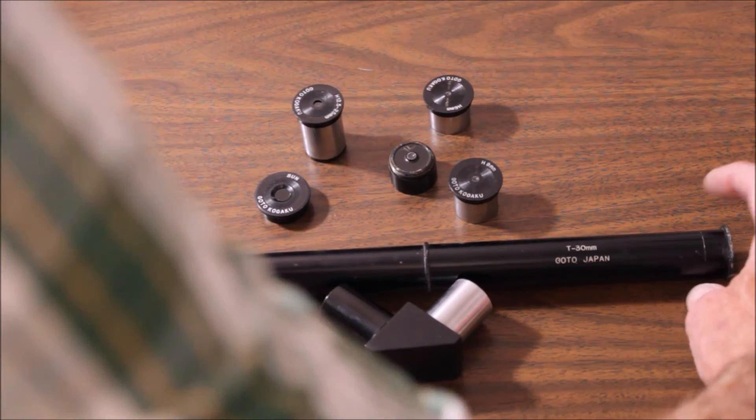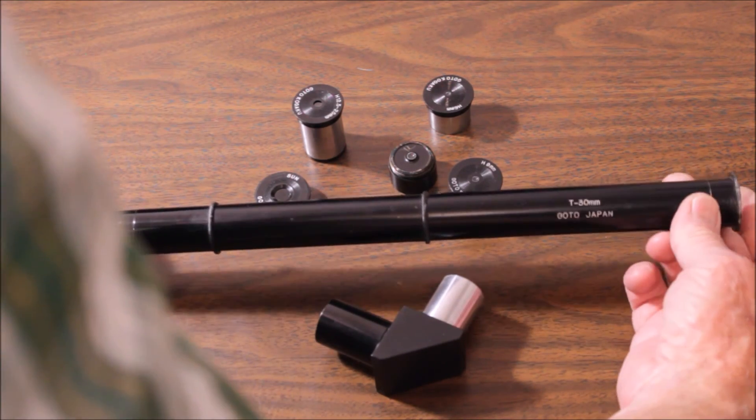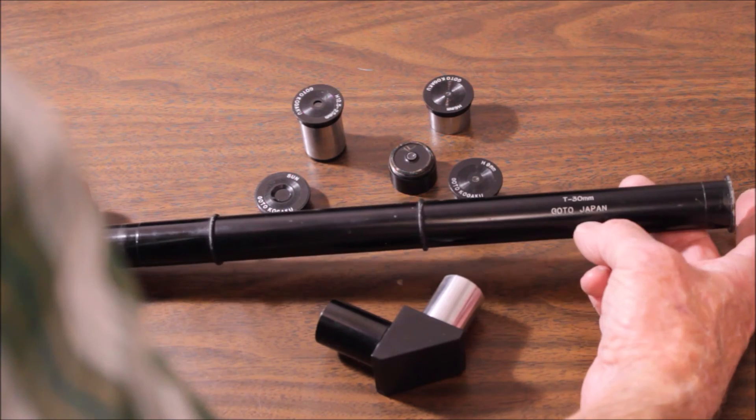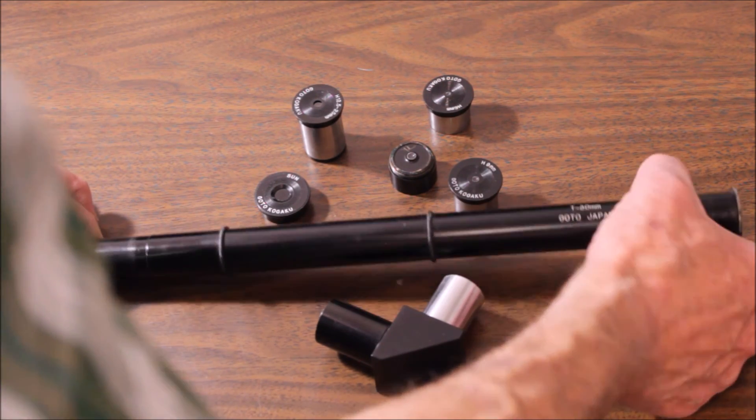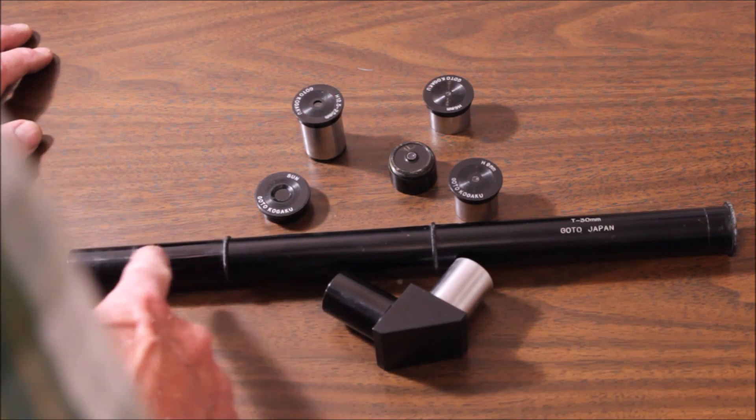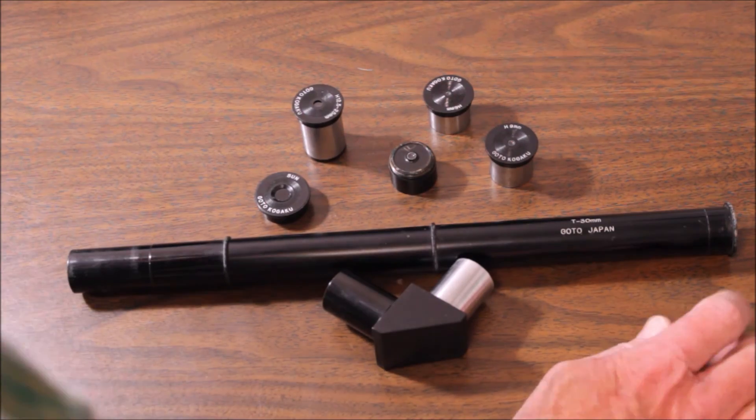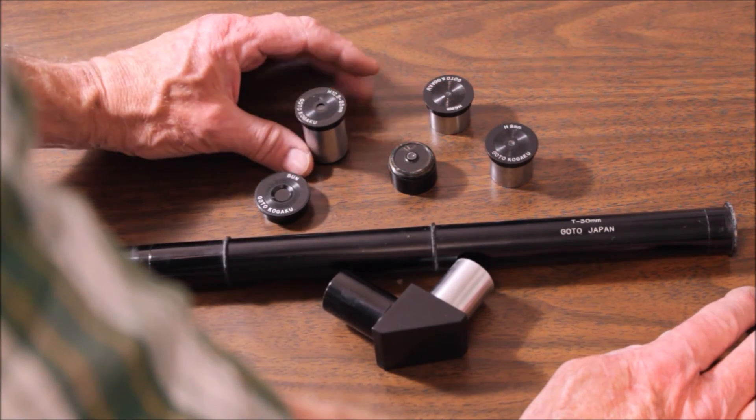All right, here are all the eyepieces. Notice this has got the extremely unusual. I don't think I've ever seen one before. This is a 30 millimeter. This is an image directing system. So it's a fixed length eyepiece. It's not a zoom eyepiece. It's 30 millimeters. There's optics all the way through there, several lenses and so forth. Very old school kind of a way to do it.